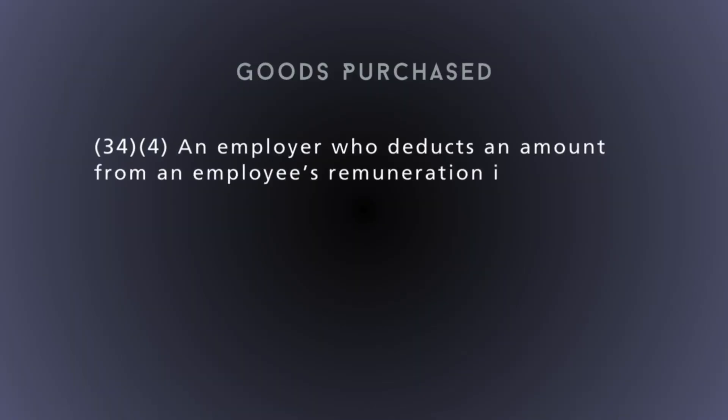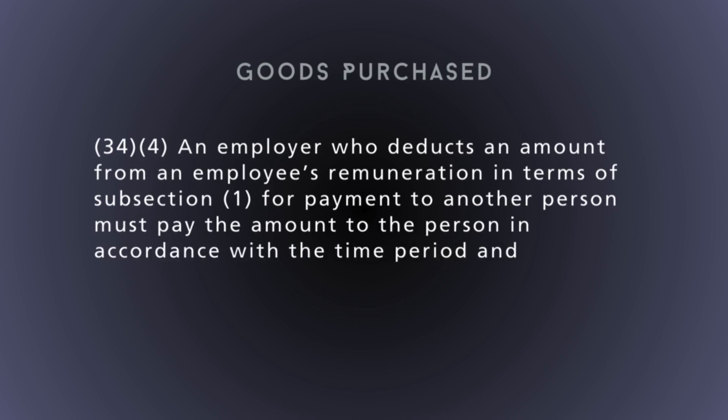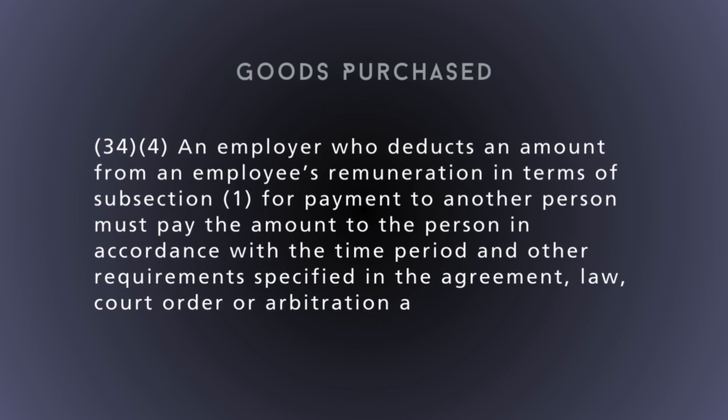Section 34(4): an employer who deducts an amount from an employee's remuneration for payment to another person must pay that amount to the person in accordance with the time period and other requirements specified in the agreement, law, court order, or arbitration award. This is simply saying that if an employer deducts money from an employee to pay it over to another person or organization, they must do so in accordance with the timeframe and manner specified in that order, award, or agreement.